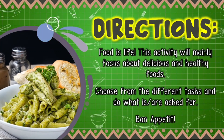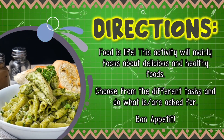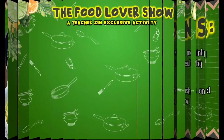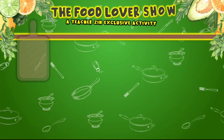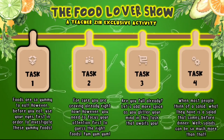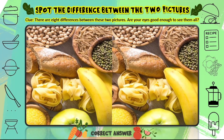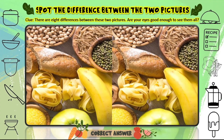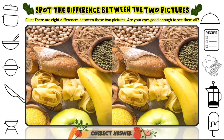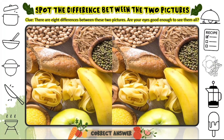The Food Lovers Show is an activity with 4 tasks to accomplish. Each task has a corresponding introductory statement that serves as a clue before heading to the challenge. In Task 1, foods are so yummy to eat — however, before you eat, use your eyes first to investigate these yummy foods. Two almost identical photos are provided, and the student's task is to spot which part of the first photo is different from the other. There are 8 differences between the two given pictures. This task will test the student's observation skills.